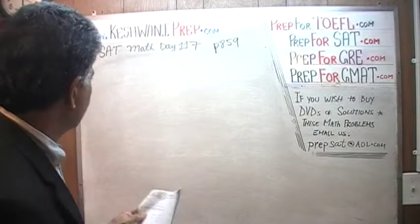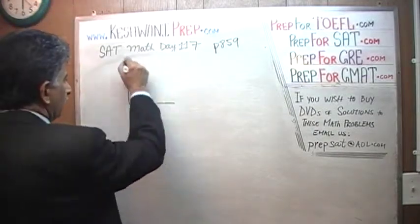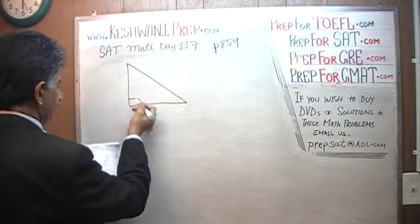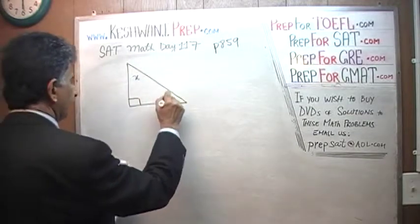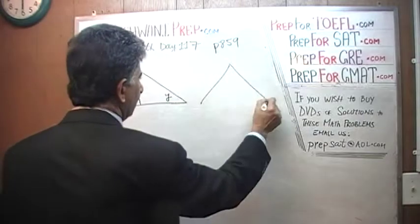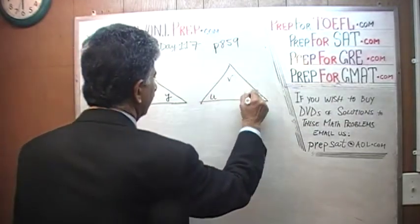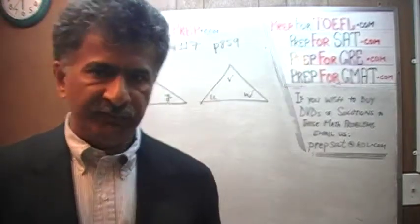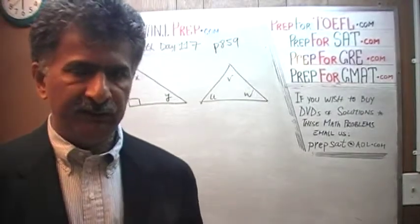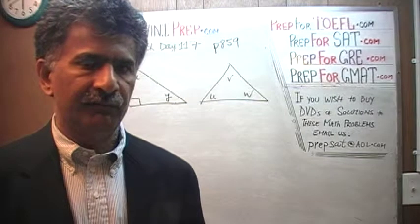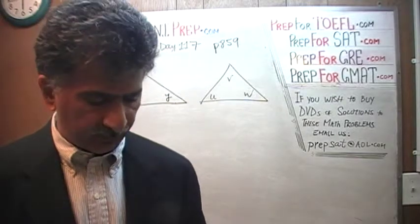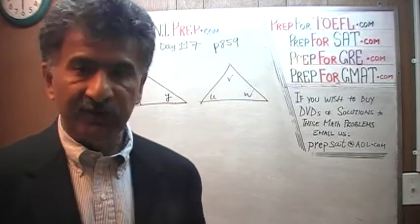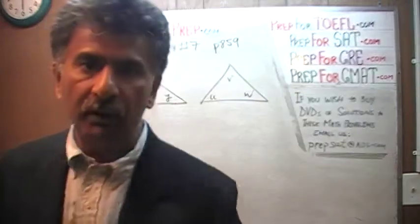We are given two triangles. This triangle is a right angle triangle because they tell us this is 90 degrees. This is X and this is Y. And this we are told is U, V and W. The fact that they are using three different symbols tells us these are three different values of angles. The question simply is, what is their average? What is the average of these five angles?